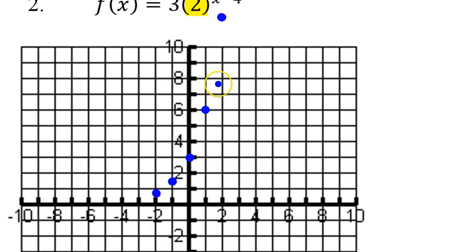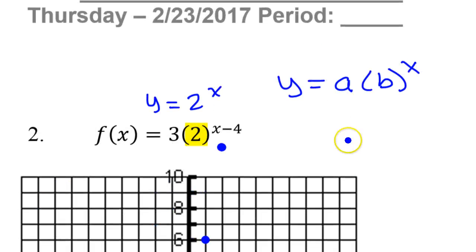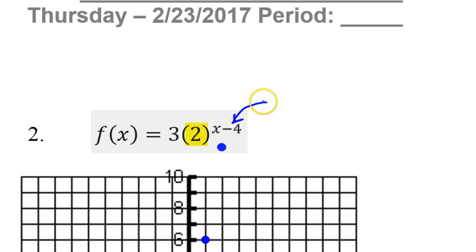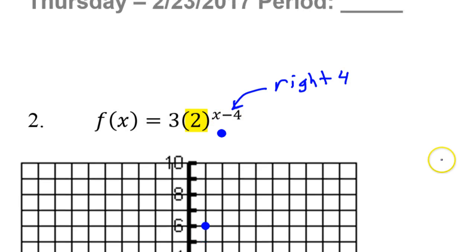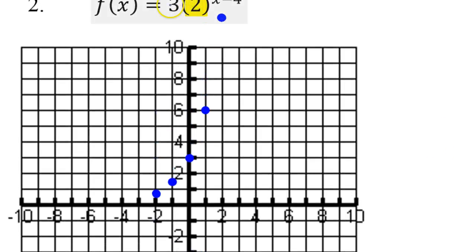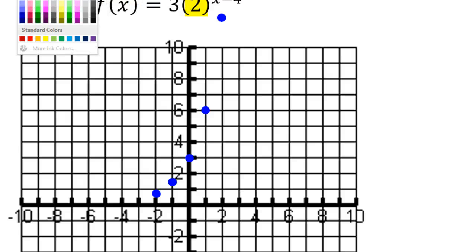I'm not going to connect these points because there's still one thing I have not done. I haven't done anything with the minus 4. This is going to be a transformation to the right by 4. Anything in this position is a left-right motion, but it's the opposite of what you would think. So negative sends you to the right. I'm just going to take each one of these dots and move them to the right by 4.